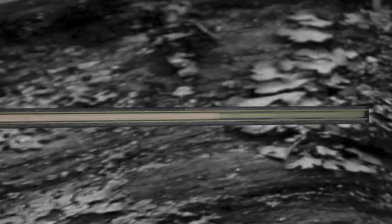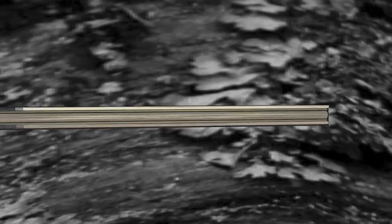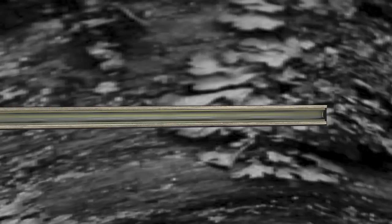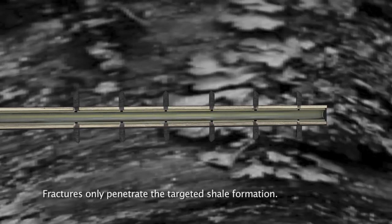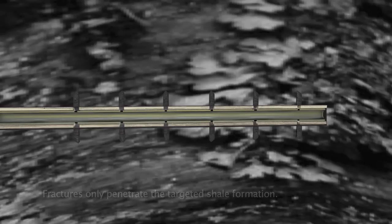Perforation of the well can now begin. A perforating device is lowered into the well bore and an electric charge is sent down the line, creating small holes in the casing, cement, and targeted rock layer. This process can be repeated multiple times along the length of the well.